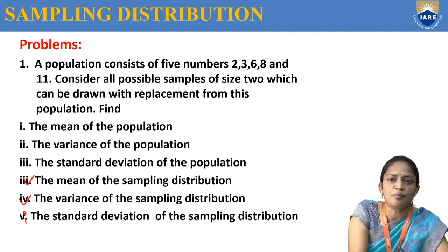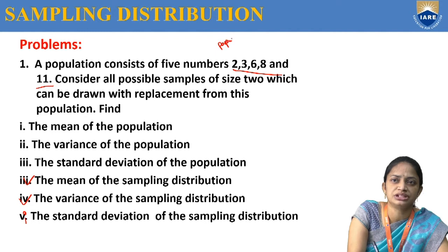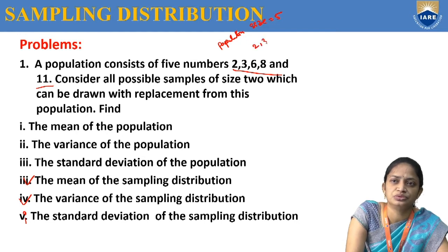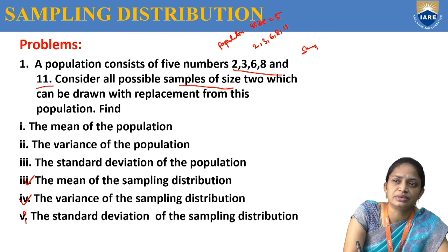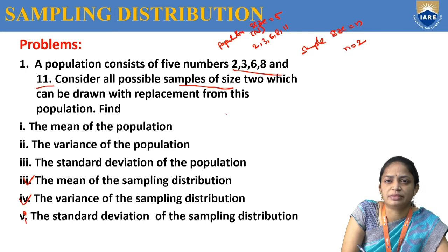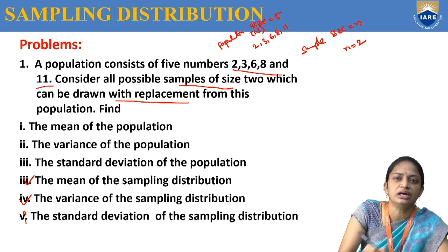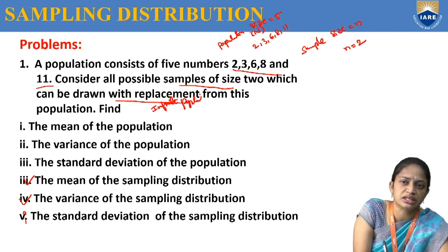Observe the question carefully. The population consists of five members, so the population size, denoted capital N, is 5. The population values are 2, 3, 6, 8, 11. The sample size is denoted small n, and here n equals 2. The samples are drawn with replacement, which corresponds to an infinite population.